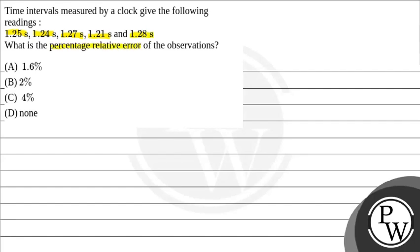What is the percentage relative error of the observations? Option A, 1.6 percent. Option B, 2 percent. Option C, 4 percent. Option D, none. The key concept that is used in this question is percentage relative error.